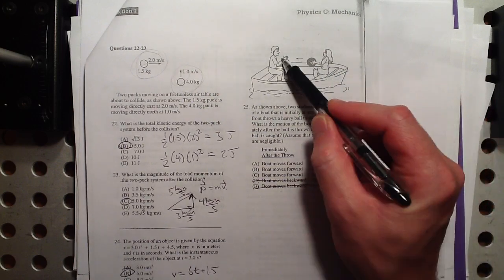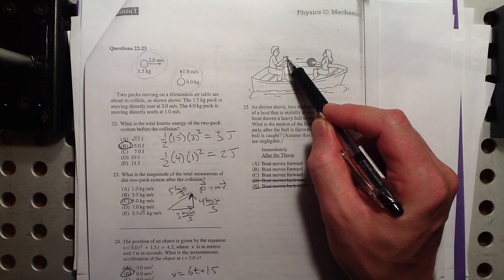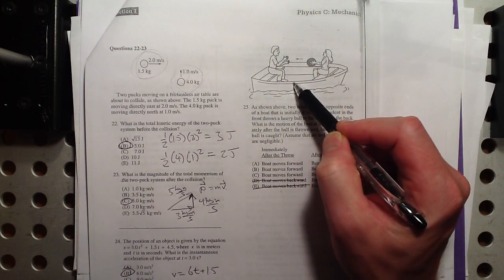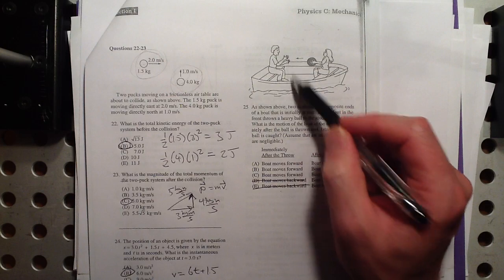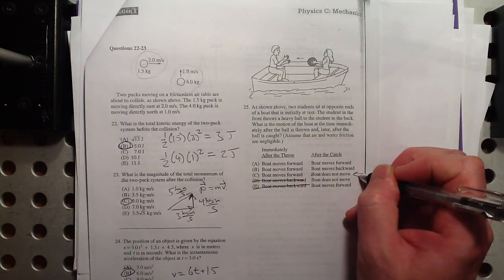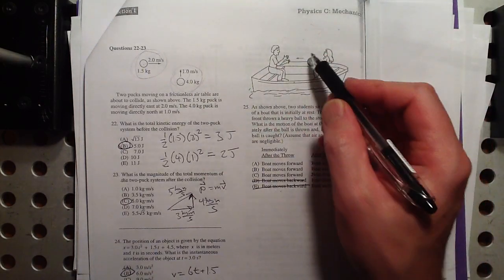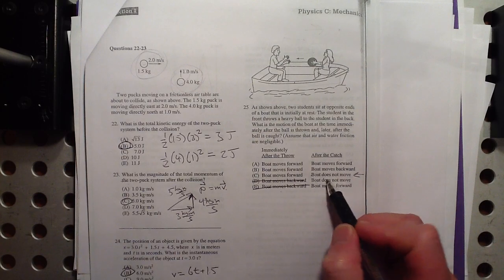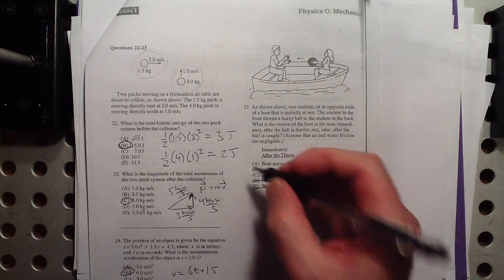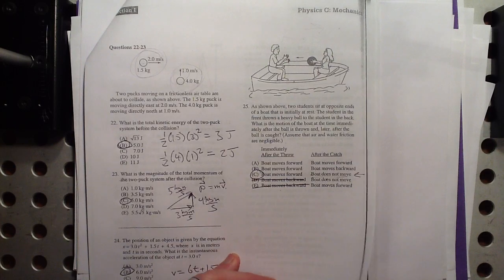And then when he catches the ball, then the momentum of the ball is now zero, which means the momentum of the boat must also be zero, because momentum must be conserved. So after he catches it, we're back to our initial state, although the ball has moved. The momentum must return back to zero, so the boat does not move. That's a conservation of momentum problem there.